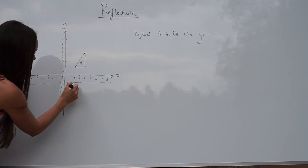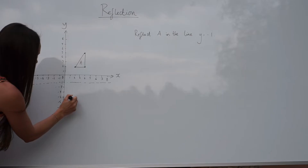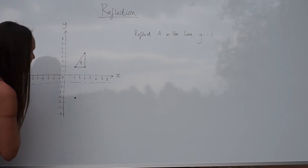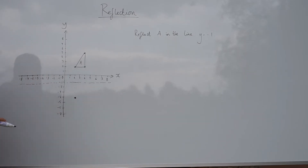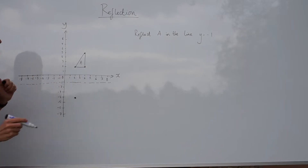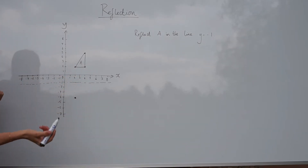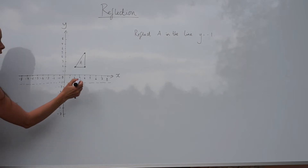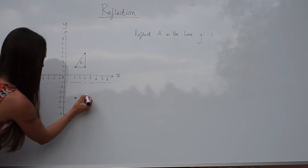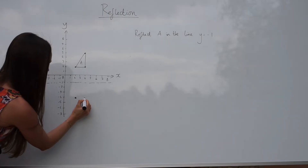So I'm going to count one, two, three. Obviously when you do this in an exam question, you'll be a lot more tidy than me on the whiteboard. For the second point, again it's three units from the mirror line, so you count three units below: one, two, three. There's the second point.